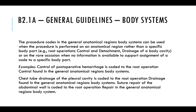This coding guideline says the procedure codes in general anatomical region body systems can be used when the procedure is performed on an anatomical region rather than a specific body part — that is, root operations control, detachment, drainage of a body cavity, or on rare occasion when no information is available to support assignment of a code to a specific body part. For example, control of postoperative hemorrhage is coded to the root operation control found in the general anatomical region's body system.